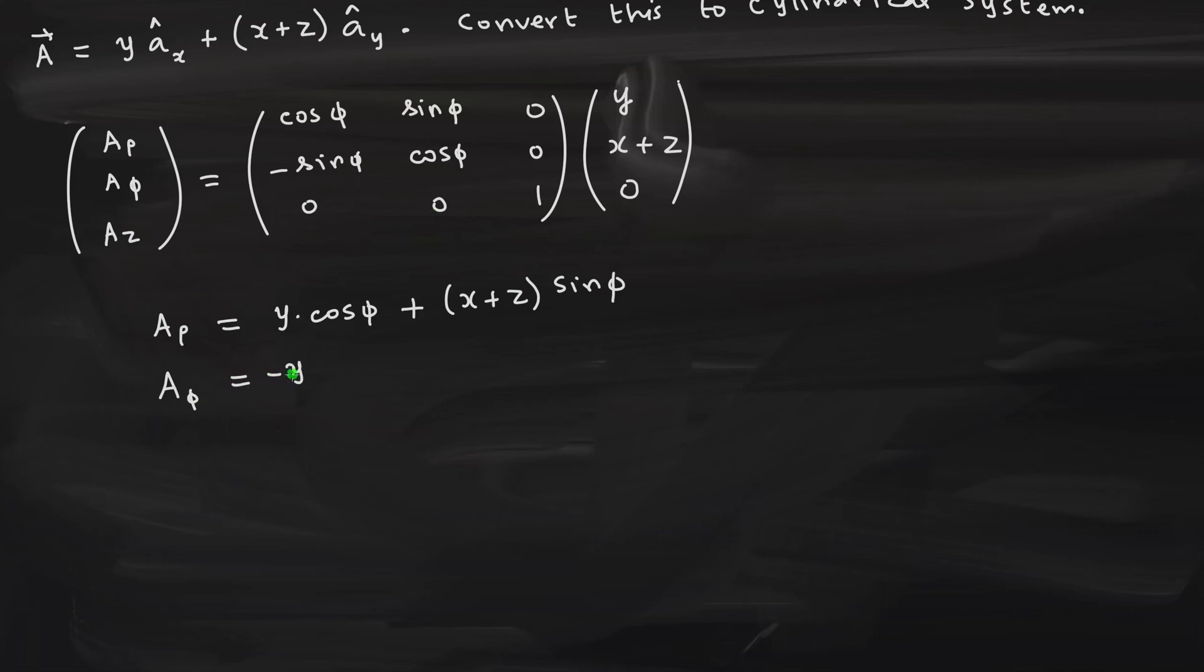Y times cos phi. And similarly, A phi would be equal to multiply these two. We will get minus Y times. This particular row I am showing in the green color. See it. This particular row will be multiplied by this column. And then the last one is the AZ. And that is all. This is the answer.